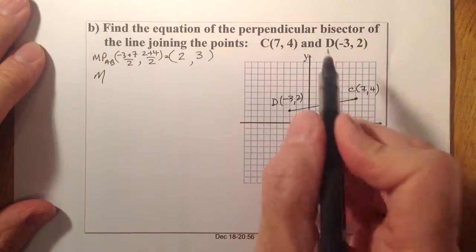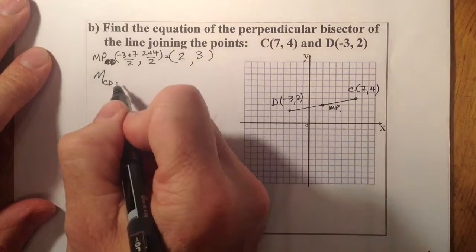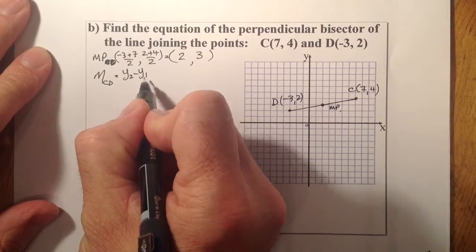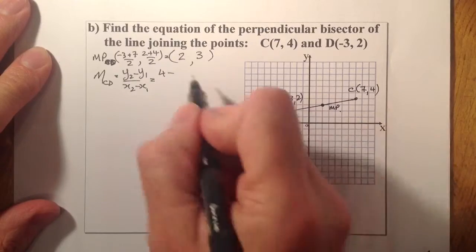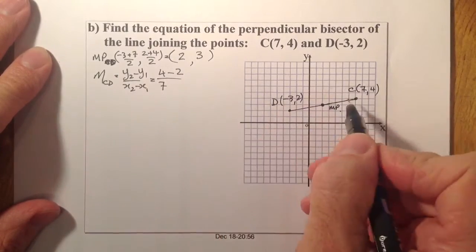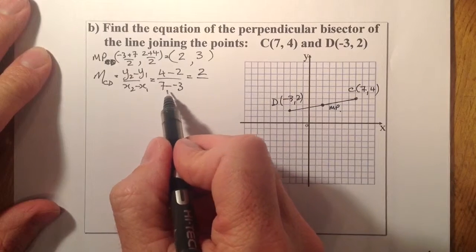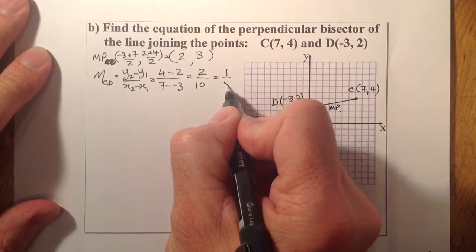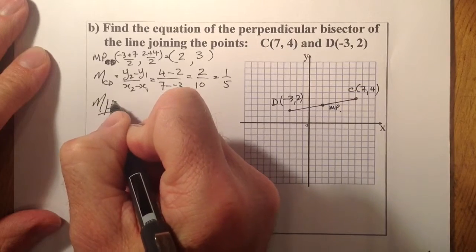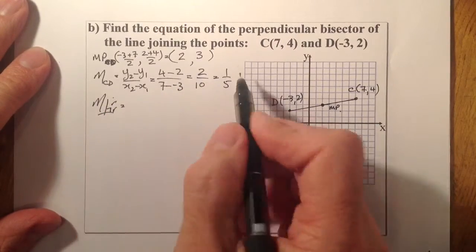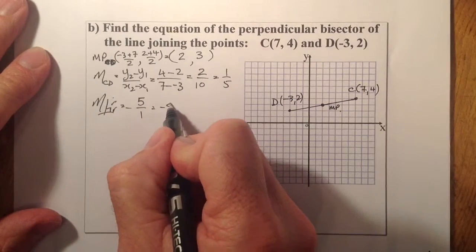Let's find the gradient of line CD using y2 minus y1 over x2 minus x1. Starting with this point: 4 minus 2 on top, and 7 minus minus 3 on the bottom. On top I've got 2, and on the bottom 7 plus 3 gives 10. So the gradient is 1 fifth. The perpendicular gradient is found by flipping that to 5 over 1 and changing the sign, giving minus 5.